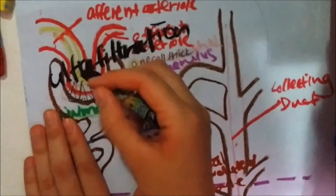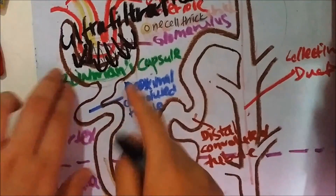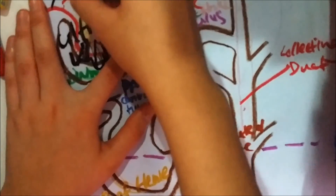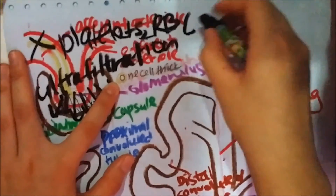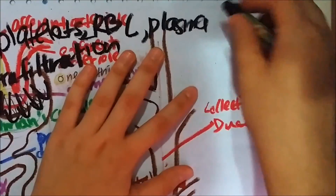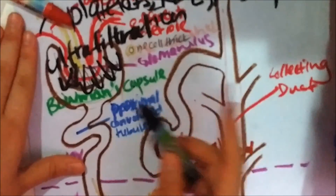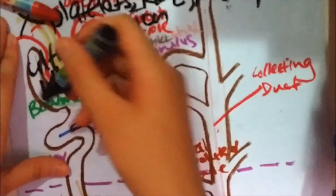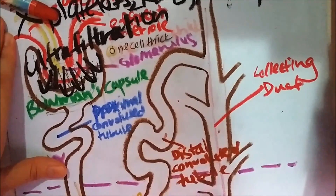Ultrafiltration occurs when blood is pushed into the Bowman's capsule. The filtrate in the Bowman's capsule has almost the same content as blood in the glomerulus, except it does not have platelets, red blood cells, and plasma proteins. This is because the glomerulus is only one cell thick, and red blood cells, platelets, and plasma proteins are all large-sized molecules, so they cannot be transferred into the Bowman's capsule.